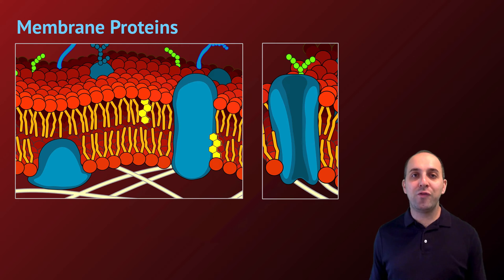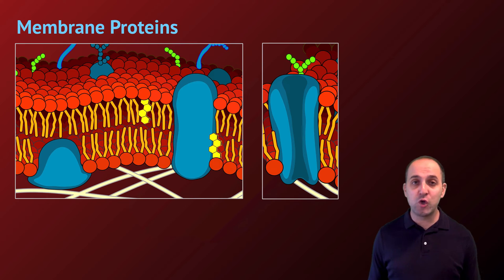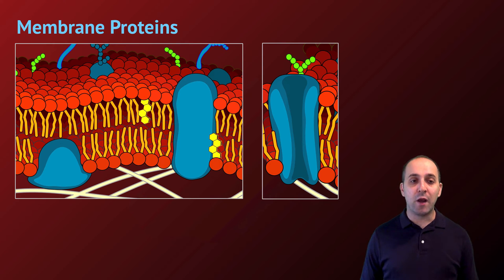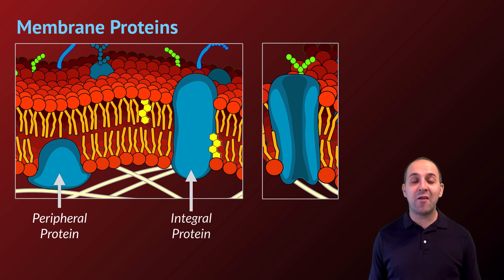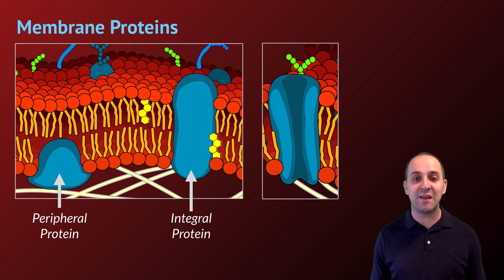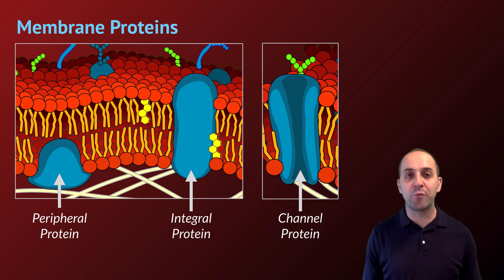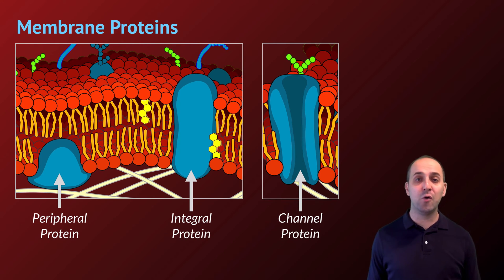You probably noticed the big blue things floating in the membrane — these are embedded membrane proteins. There are a variety of different proteins embedded inside of a membrane and they serve different roles. We're going to classify them based upon their relationship to the membrane. Proteins associated with one side of the bilayer are referred to as peripheral proteins, and proteins that go through both layers of the bilayer are referred to as integral proteins. This image spotlights one particular role played by this type of integral protein, which is a channel protein allowing substances to move from one side of the membrane to the other.